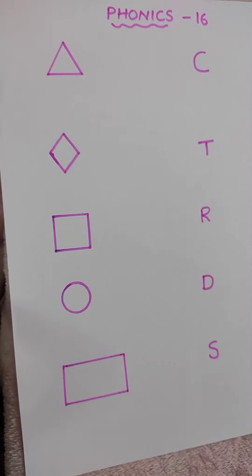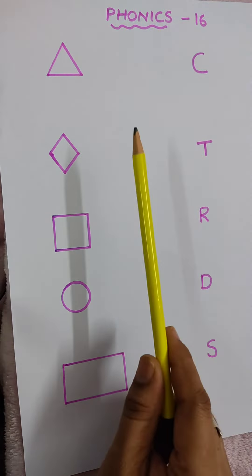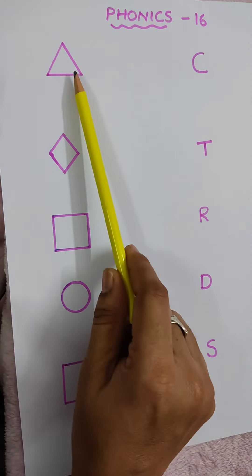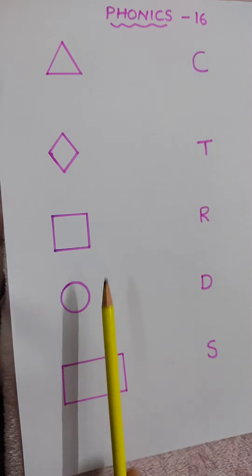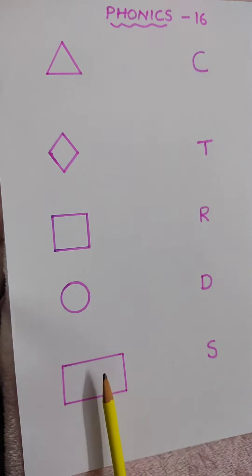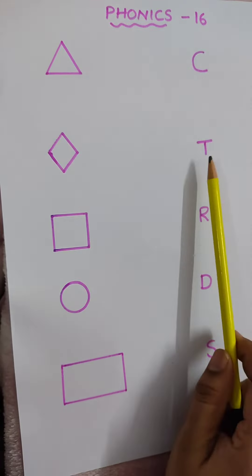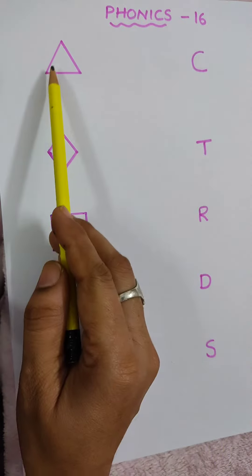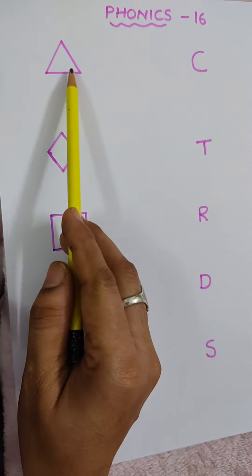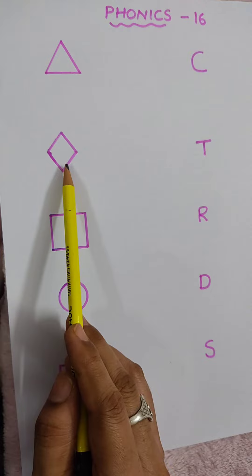Hi everyone, today's worksheet number 16 is a phonic sound worksheet. Here we have some shapes: triangle, diamond, square, circle, and rectangle. I wrote the letters C, T, R, and D. This is a triangle — triangle starts with the letter T. Diamond starts with D.